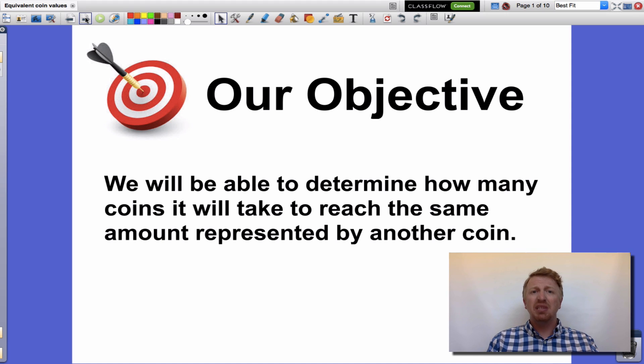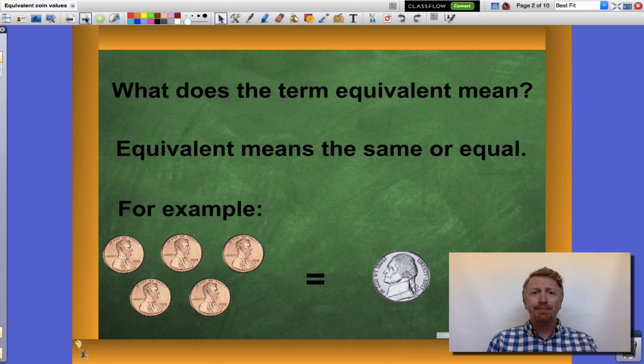Let's take a look at what that means. The first term we need to figure out is what does equivalent mean. Equivalent means the same or equal. For example, five pennies equals five cents, that is the same as the value of a nickel which is also worth five cents. Five pennies is equivalent to one nickel.